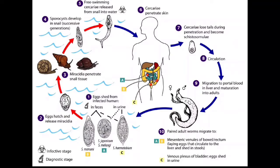Two generations of sporocysts develop and cercariae are created within the snail. The infective cercariae swim after being released from the snail, penetrate the skin of the human host, and shed their forked tails, forming schistosomulae.